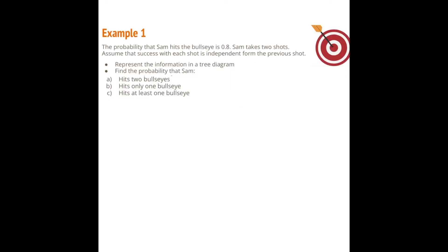Example one: the probability that Sam hits the bullseye is 0.8. Sam takes two shots, and each shot is independent from the previous. We need to represent the information in a tree diagram and then find the probabilities. Since our person is shooting two times, a tree diagram is the best representation.